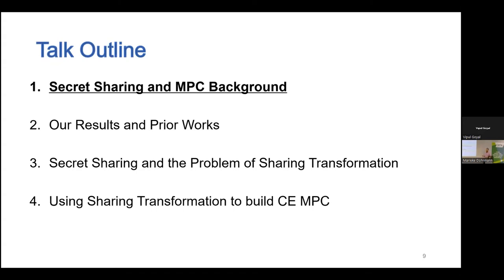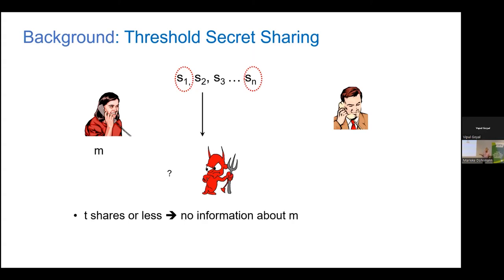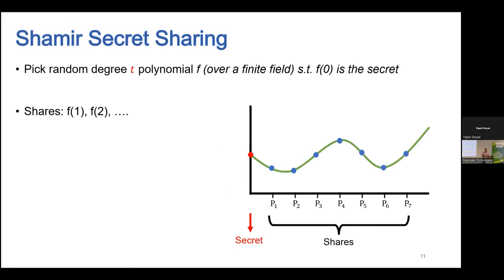Here's the outline for the rest of the talk: I'll start with background on secret sharing and how it can be used to build MPC, then talk about our results and prior works, then discuss the key technique of sharing transformation, and finally show how to use sharing transformation to build communication-efficient MPC. Let's start with threshold secret sharing: a party has a secret message m, and the scheme allows them to break m into n shares s1 to sn, so that any t shares reveal no information about m, but any t+1 or more shares allow complete recovery. Threshold secret sharing was introduced by Shamir in 1979.